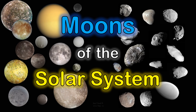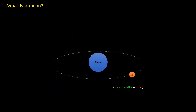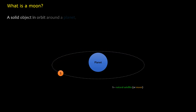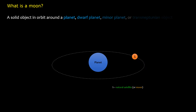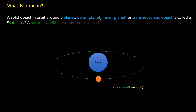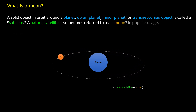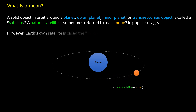Moons of the solar system. What is a moon? A solid object in orbit around a planet, dwarf planet, minor planet, or trans-Neptunian object is called a satellite. A natural satellite is sometimes referred to as a moon in popular usage; however, Earth's own satellite is called 'the Moon' in both scientific and popular usage.